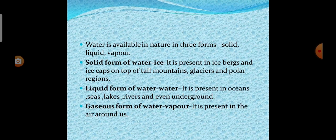Now we will see where do we get water from. Water is available in nature in three forms: solid, liquid, and vapor. Solid form of water is present in icebergs and ice caps on top of tall mountains, glaciers, and polar regions.